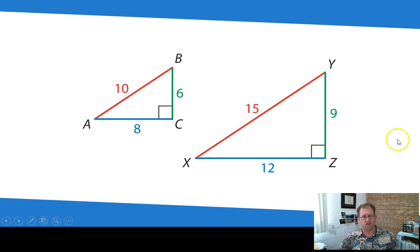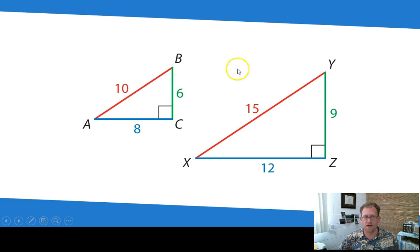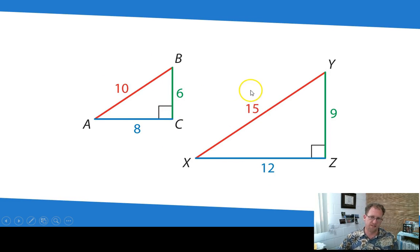Here you can demonstrate that. I've got two similar triangles, triangle ABC and XYZ. The hypotenuse of this triangle is 10, and the hypotenuse over here is 15. If you just use those two to build a ratio, the ratio of 10 to 15 is 2 to 3 — 2 times 5 and 3 times 5. The ratio of this leg is 6 to 9, also a ratio of 2 to 3 — 2 times 3 and 3 times 3. And the ratio here, 8 to 12, is 2 times 4 and 3 times 4. So the ratio between the two triangles is all the same.